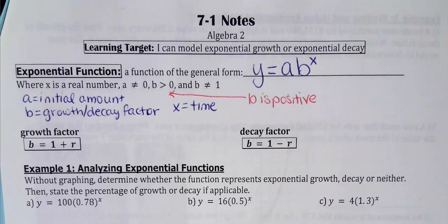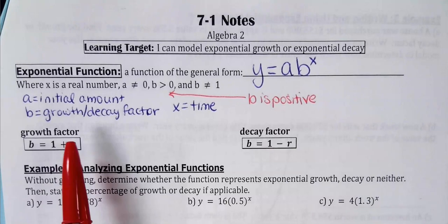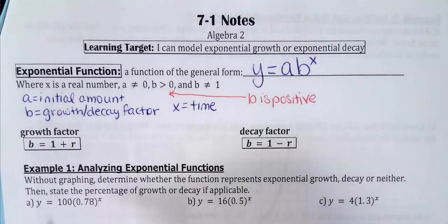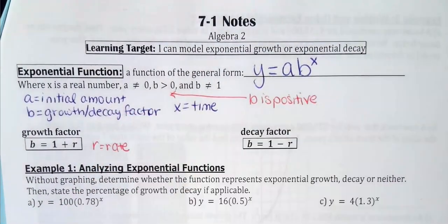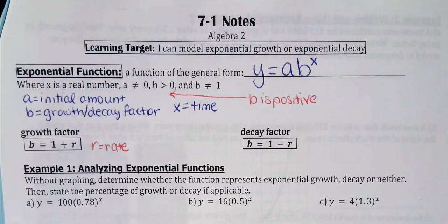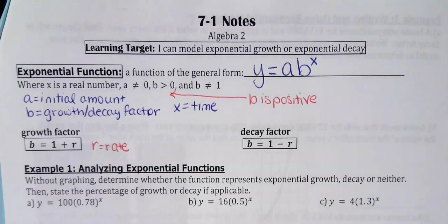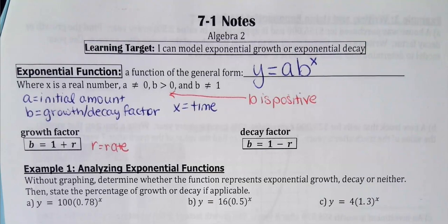Now, if b is greater than one — so whatever's in your parentheses to your exponent is bigger than one — that indicates exponential growth. If you have growth, the b value is one plus the rate r. The rate is usually given as a percentage, so you may have to convert it to a decimal. If it's decay, it's going to be one minus the rate.